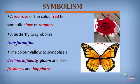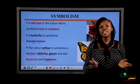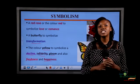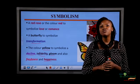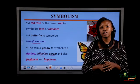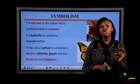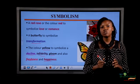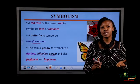Finally, a writer can use the color yellow to symbolize decline, infidelity, gloom, and also freshness and happiness. From this last example, we see that the writer uses the color yellow to mean different things, just to pass on his ideas and thoughts to the readers.